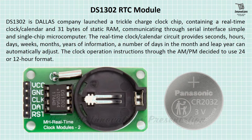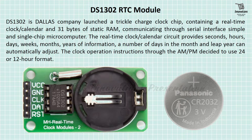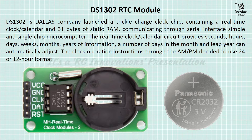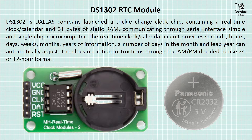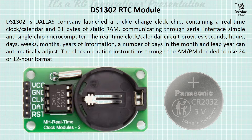Now we will move on to the DS1302 RTC module. DS1302 is a Dallas company trickle-charge clock chip containing a real-time clock calendar and 31 bytes of static RAM, communicating through a serial interface with a simple single-chip microcomputer. The real-time clock and calendar circuit provides seconds, hours, days, weeks, months, and years. The number of days in the month and leap year can be automatically adjusted.